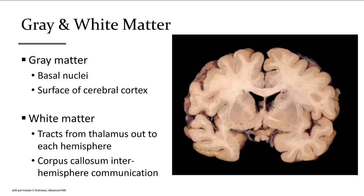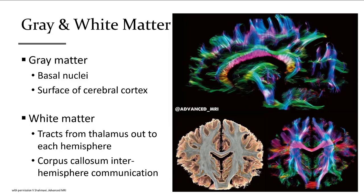The cerebrum is made of gray and white matter. The gray matter is where synapses or neural connections occur, containing cell bodies, dendrites with receptors, and axon terminals with neurotransmitters. The main areas of gray matter are the basal nuclei and the surface of the cerebral cortex. The white matter contains tracks where information is transmitted across bundles of axons from one part of the brain to another, terminating in areas of gray matter. The white matter is like the wiring of the brain.